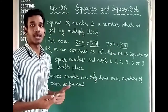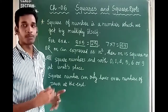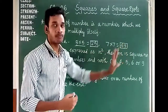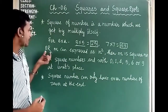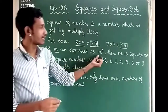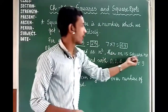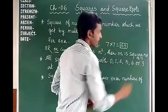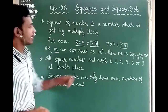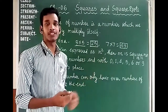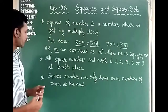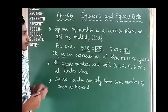That means if any number is there and you multiply that number by itself, that product will be the square number. Basically we can say if n is any number which can be expressed as n squared, then n squared is the square number of n. Any number which can be expressed in the terms of n squared is a square number.